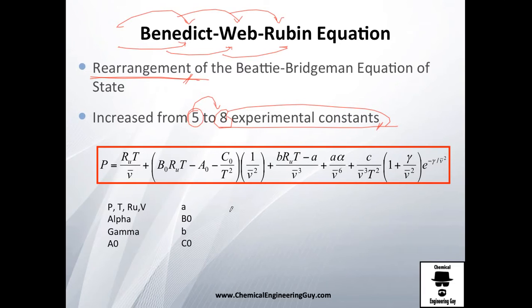So first thing first, these experimental constants are lowercase b0, lowercase c0, a0, gamma, and alpha.